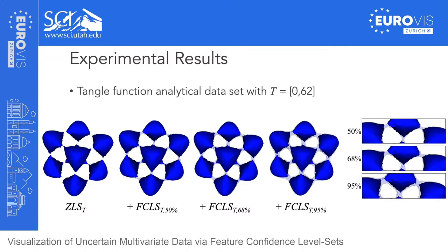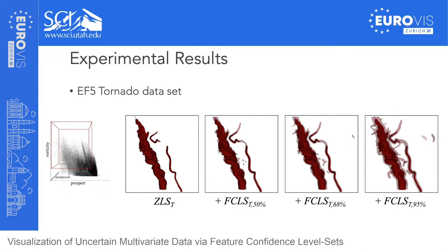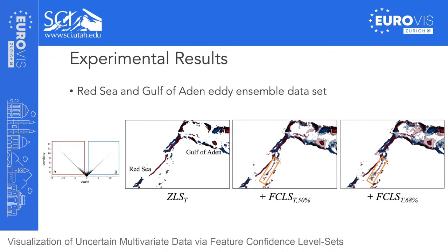For the tornado dataset, we specified a trait using three attributes related to vorticity. The feature confidence level set visualized weaker vortices in the proximity of the primary vortex satisfying the trait criteria, with envelopes becoming more prominent for nearby vortices as the confidence interval increases. For the Red Sea and Gulf of Aden data, we specified traits to visualize anticyclonic and cyclonic eddies. Mean and standard deviation were computed from 20 ensemble members. The feature confidence level sets visualized possible existence of additional eddy tracks in the Red Sea across ensemble members, which are not seen in the feature level set visualization alone.